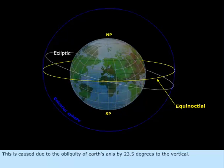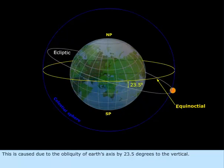This is caused due to the obliquity of Earth's axis by 23.5 degrees to the vertical.